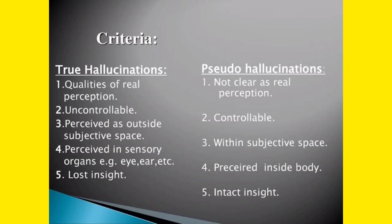True hallucination is uncontrollable — the patient cannot control the hearing of voices or seeing something. Pseudo hallucination is to some extent controllable. True hallucination is perceived as outside subjective space; pseudo hallucination is inside the subjective space. In true hallucination, sensory organs like ears and eyes are involved; in pseudo hallucination they are not. Insight is completely lost in true hallucination, but insight is intact in pseudo hallucination.